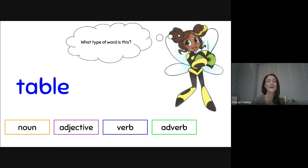And what type of word is this? Table. Hmm. Table. Is it a noun, adjective, verb, or adverb? Of course. It's a noun. It's an object. So it's a name, place, or thing. It's a thing.